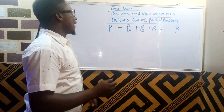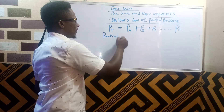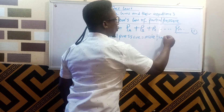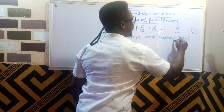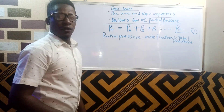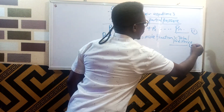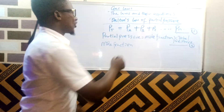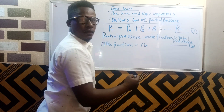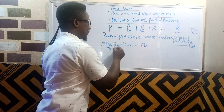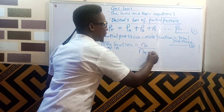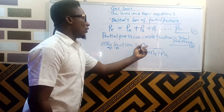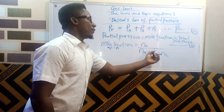Now, the partial pressure — call this equation 1 — partial pressure is equal to the mole fraction multiplied by total pressure. Call this equation 2. The mole fraction is the fraction of a particular mole in the total. If you have gas A and gas B, the mole fraction of A is the number of moles of A over the number of moles of A plus the number of moles of B plus the number of moles of C.